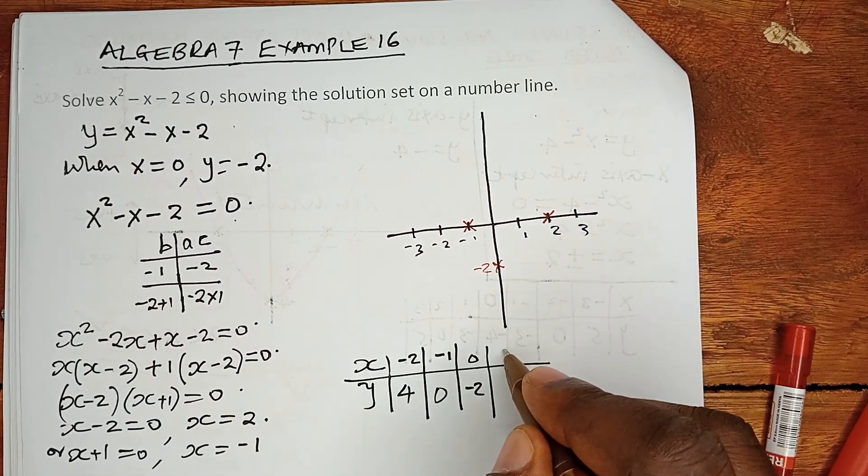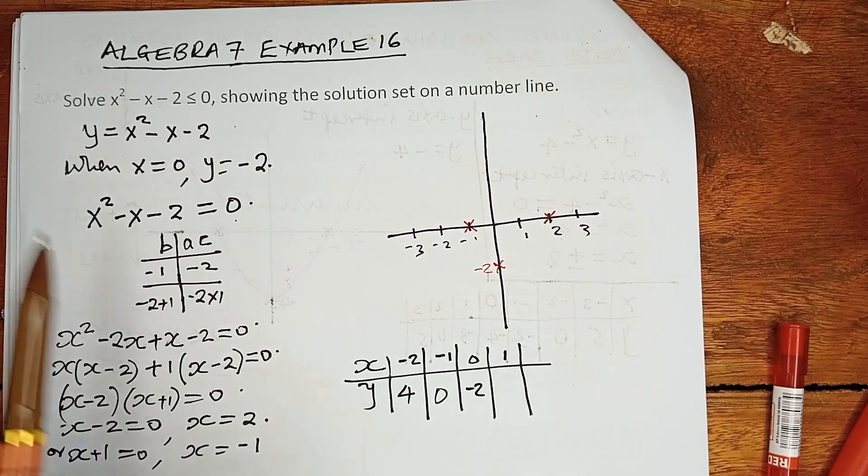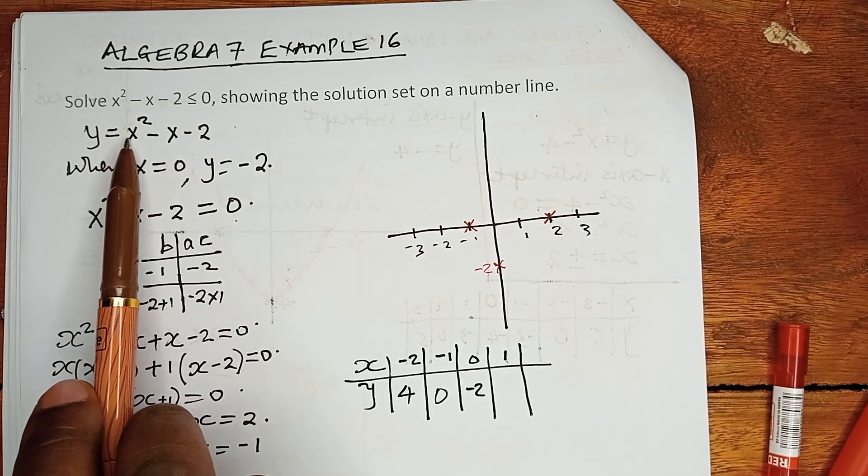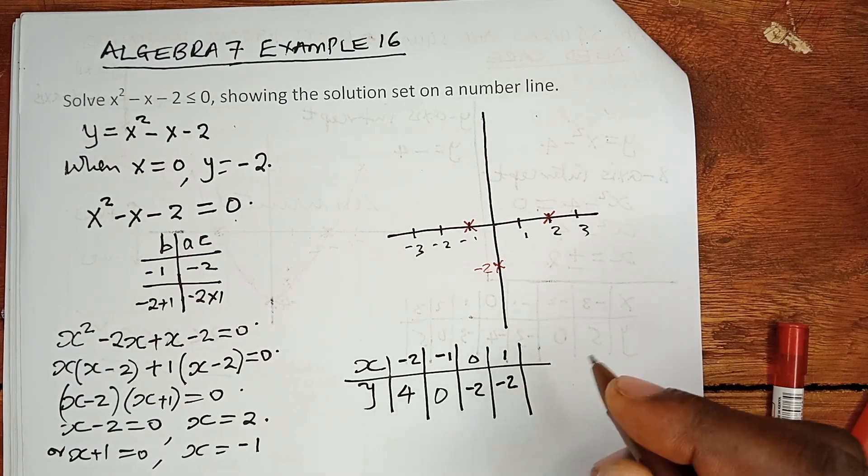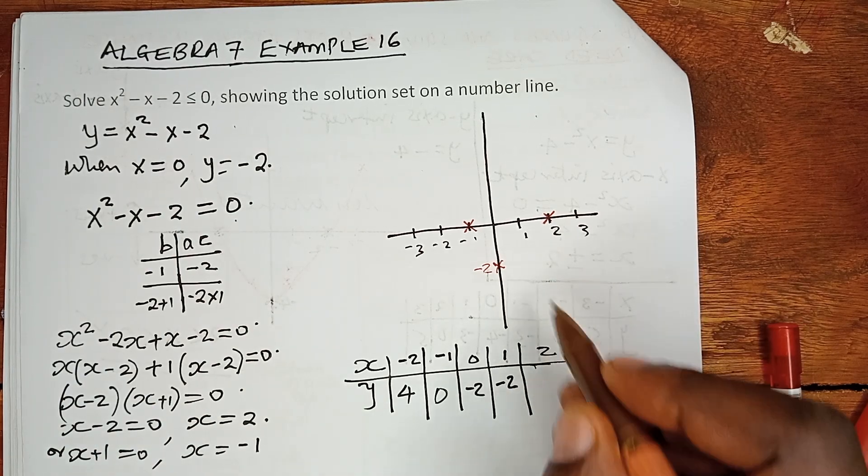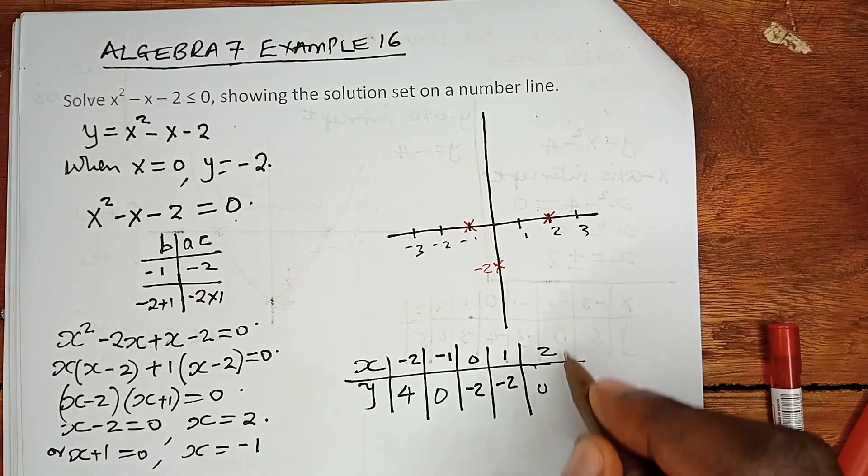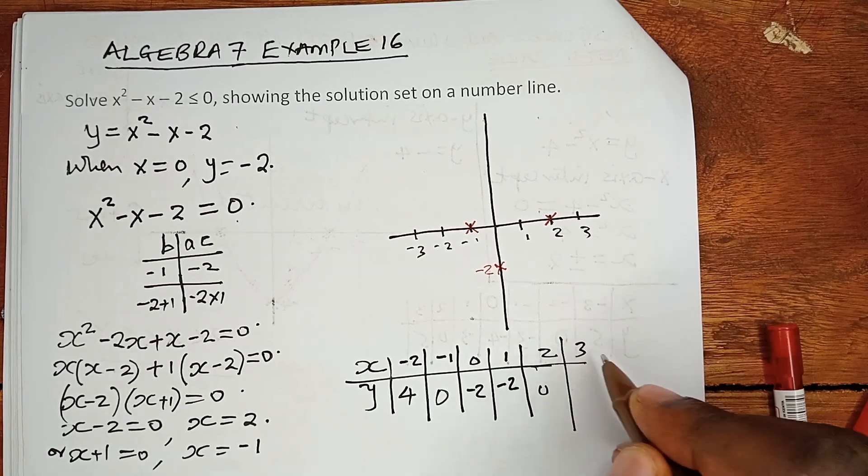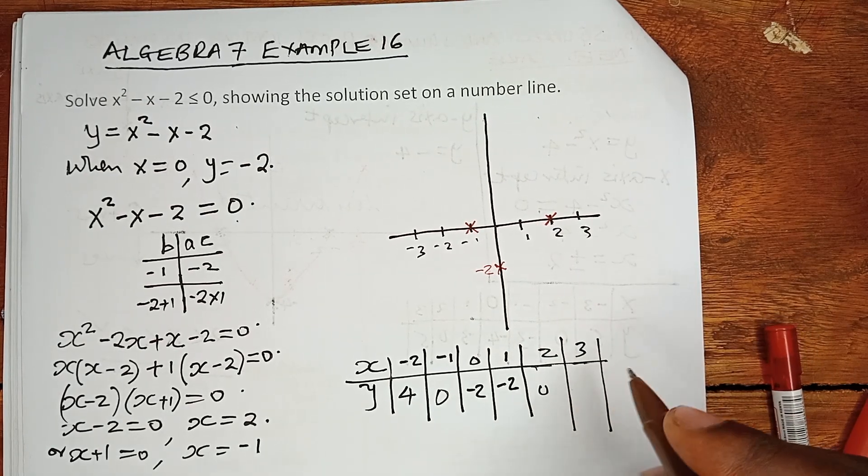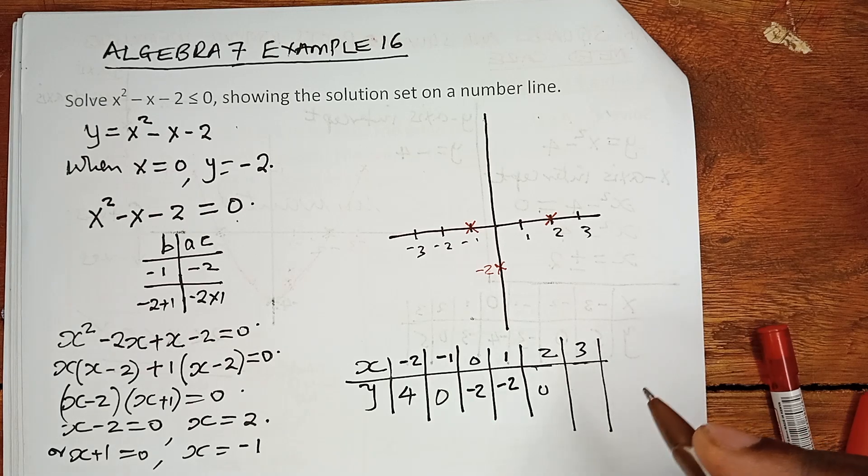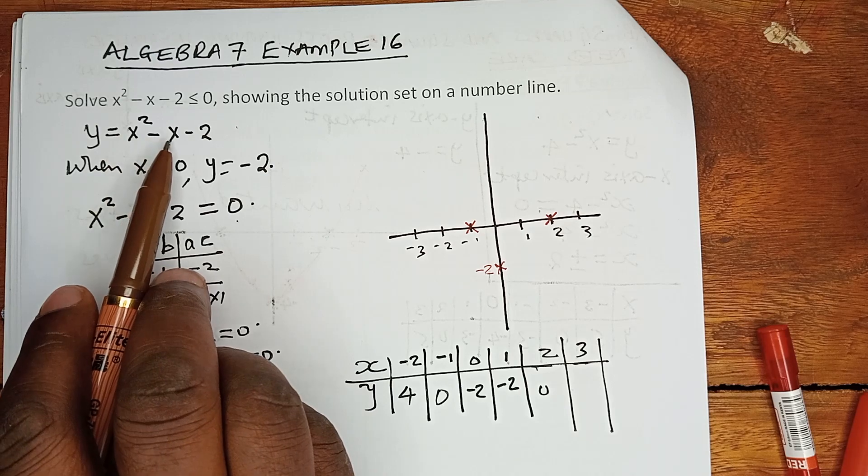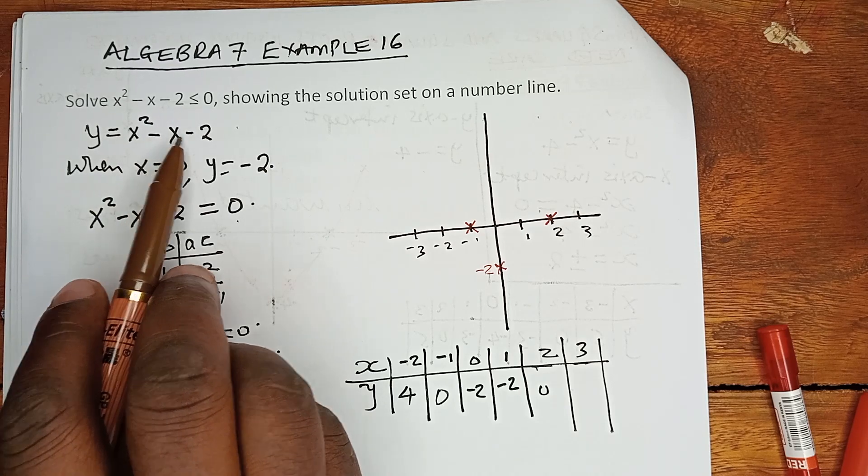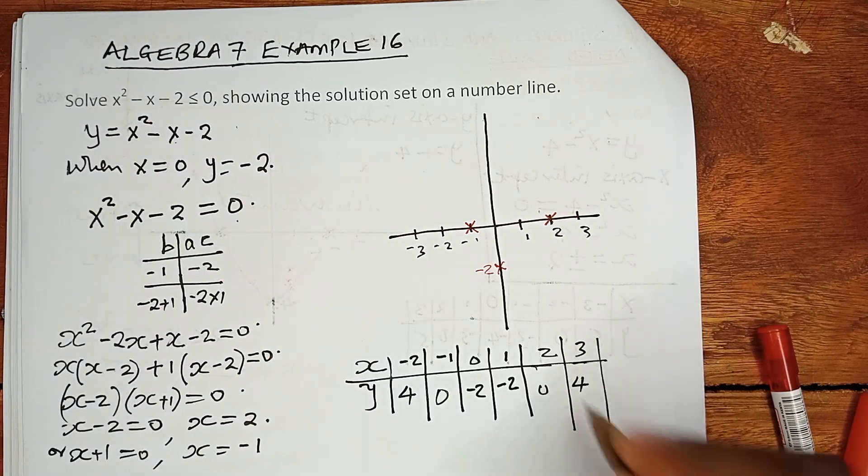When x is 0, y is negative 2. When x is 1, 1 minus 1 is 0, we are having minus 2. When x is 2, you can see y is 0. When x is 3, we must take one step above the upper limit. 3 squared is 9, minus 3 is 6, 6 minus 2 is 4.